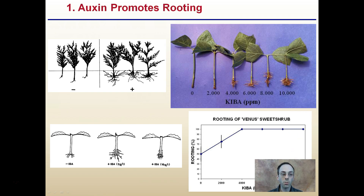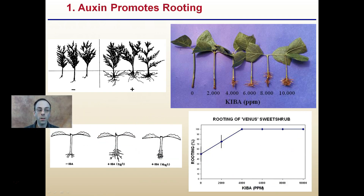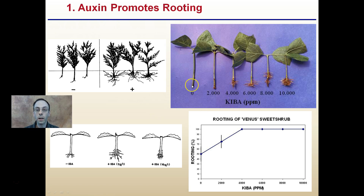Starting with promoting rooting. Here's an example of some cuttings taken with no auxin applied, and you can see the root development is quite poor. When auxin is applied, we see much more advantageous root formation. We also see a comparison of different parts per million of a particular auxin. At zero, we see hardly any root formation, and as we increase auxin levels, we see an increase in the rooting percentage.